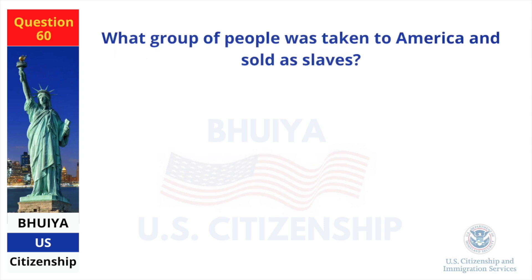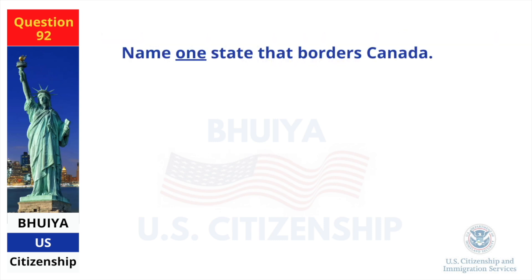What group of people was taken to America and sold as slaves? Africans. Name one state that borders Canada. New York.